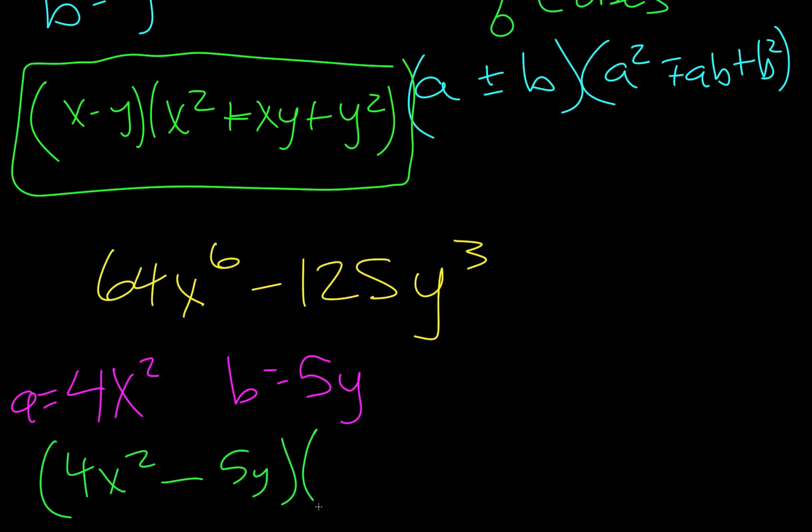We start another parentheses. We square a. So we have to square both pieces of a. So 4 squared would be 16. x squared squared would be x to the 4th. We're following the bottom because the original was minus, and this tells us where to follow. And so we get a plus sign. Then we have to do a times b. So we're going to do 4 times 5, which is 20. And then x squared times y is just x squared y.